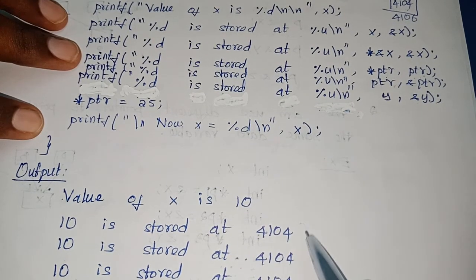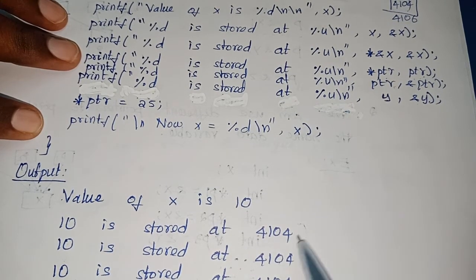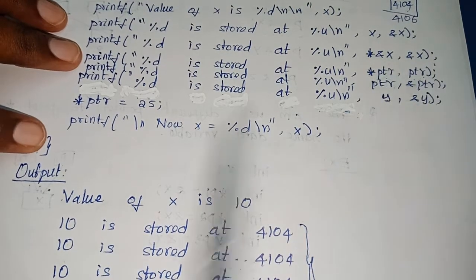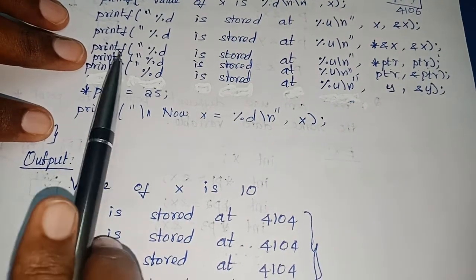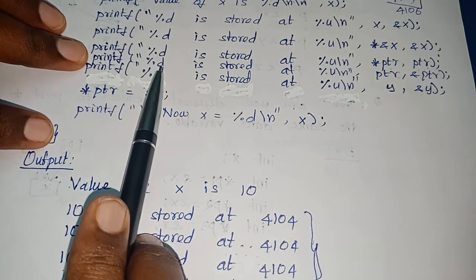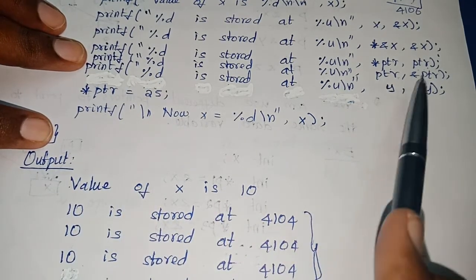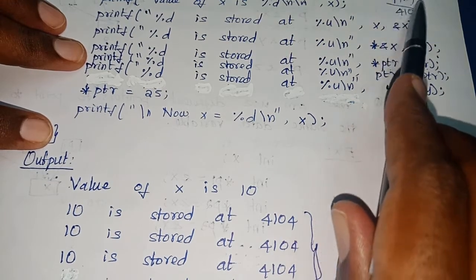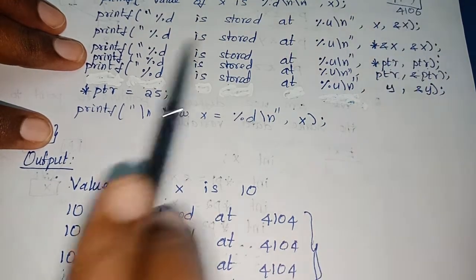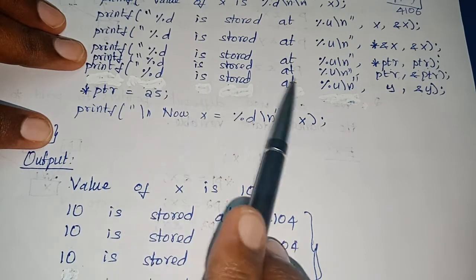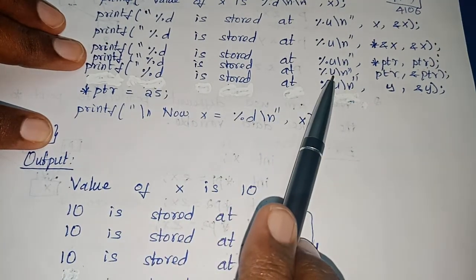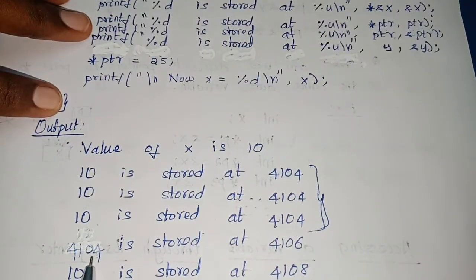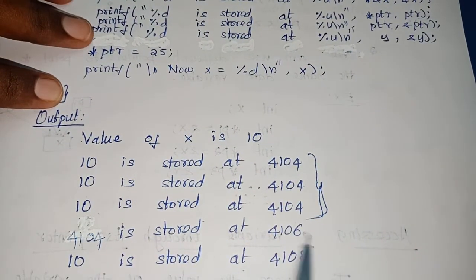All of these are the same statements but different ways of printing the values and their address. Next printf: '%d' with argument ptr — without any ampersand or indirection operator, so it collects the value stored in ptr. The output is: '4104 is stored at' — what is the address of ptr? — 4106. So: 4104 is stored at 4106.